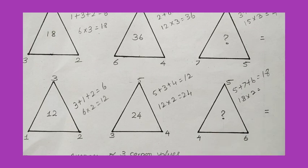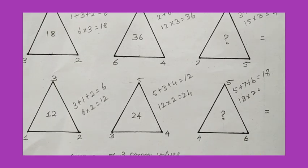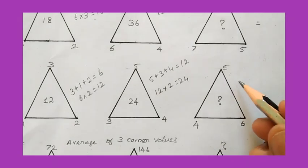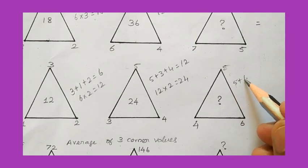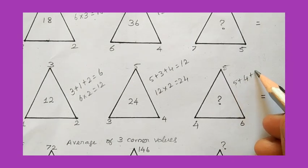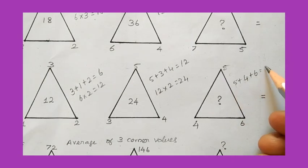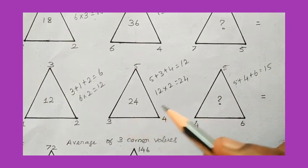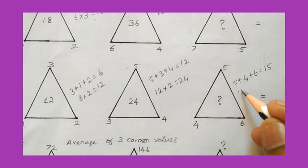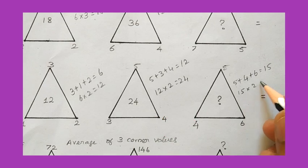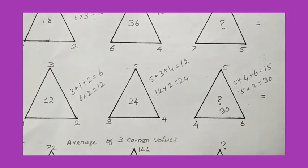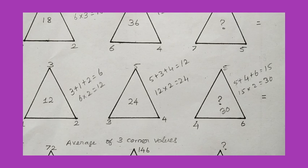For the third triangle, the corner values are 5 plus 4 plus 6. Adding them gives 15. From the previous two triangles, I multiply 15 by 2, giving 30 as the answer.